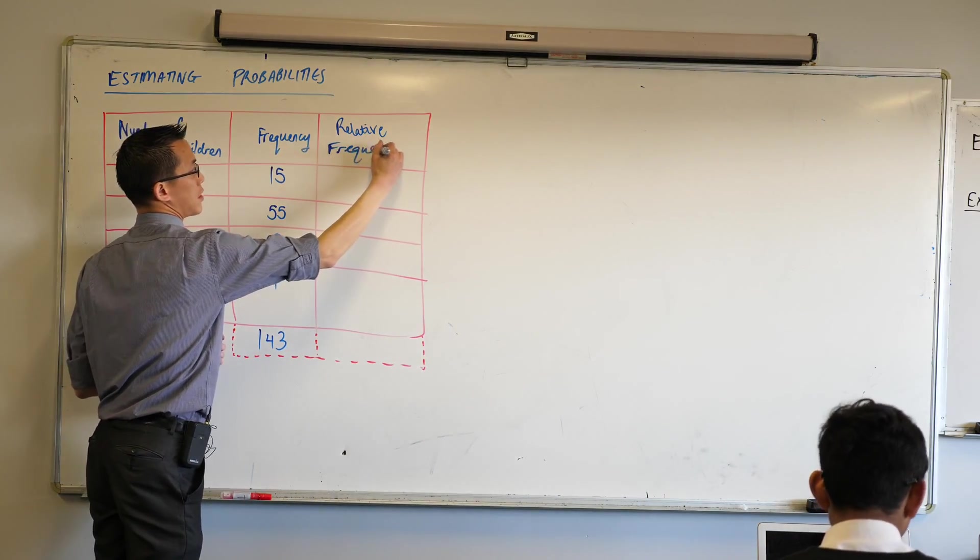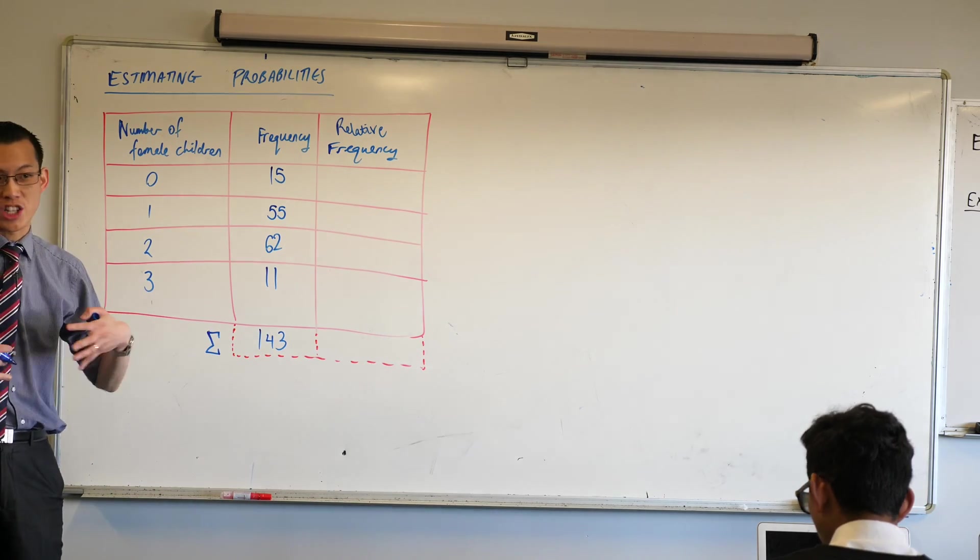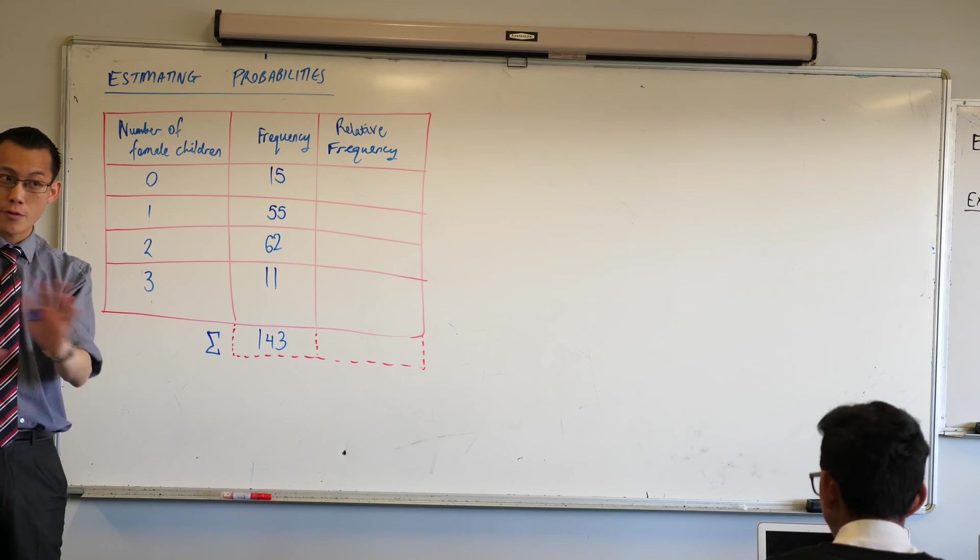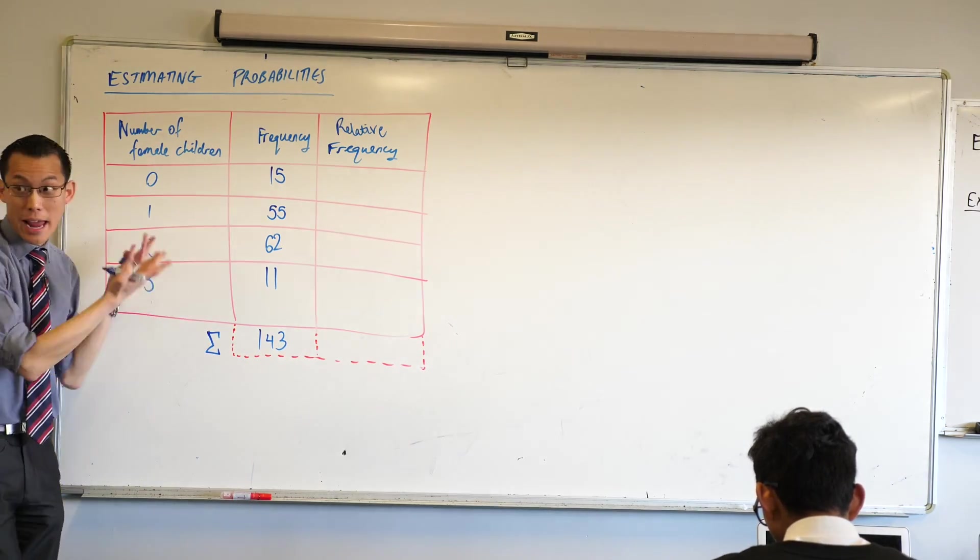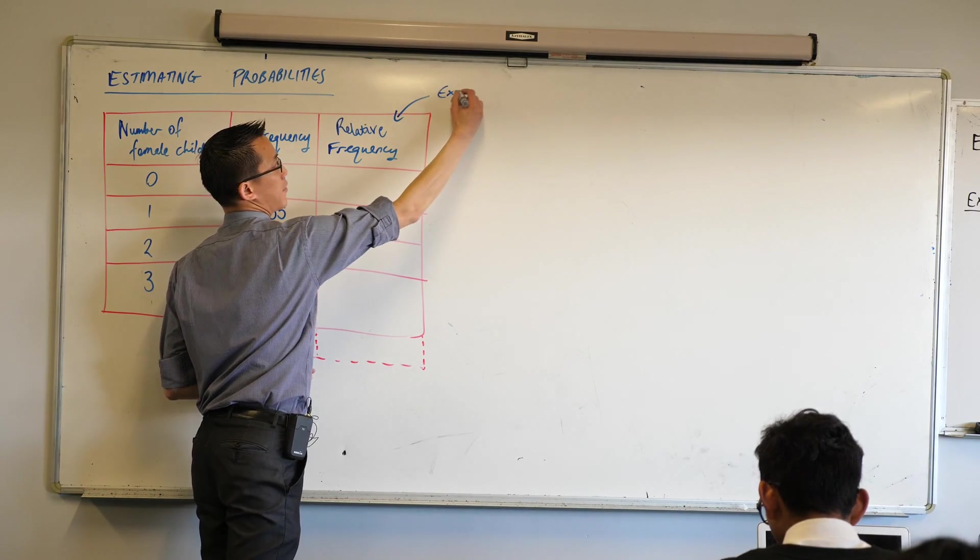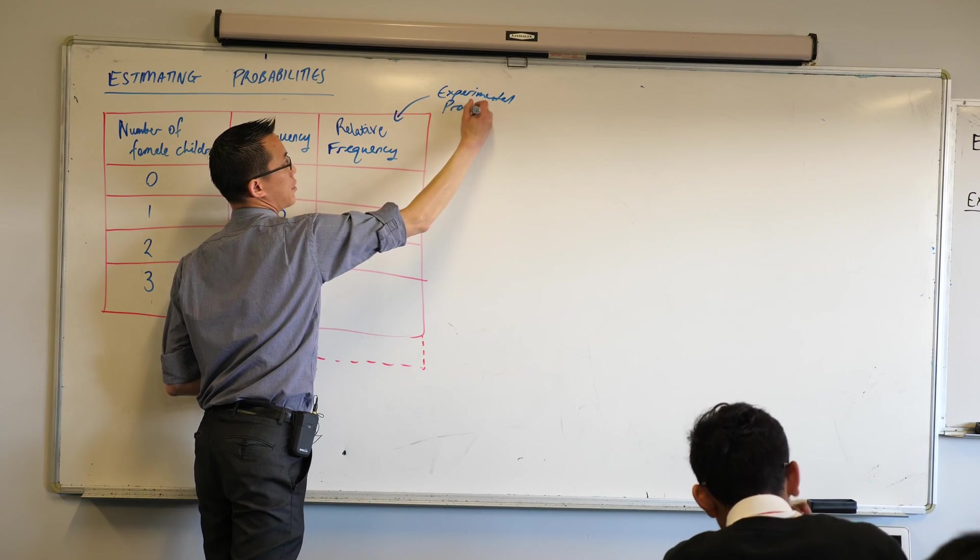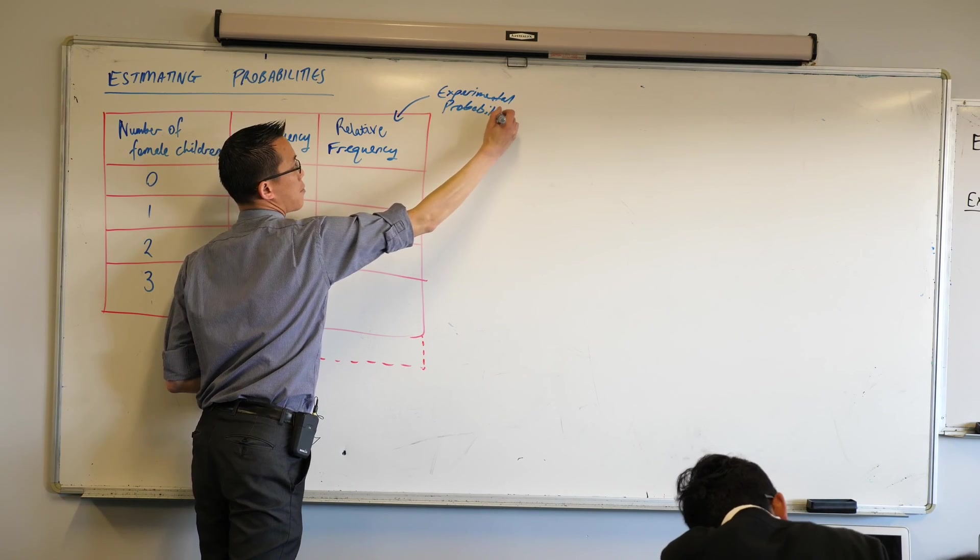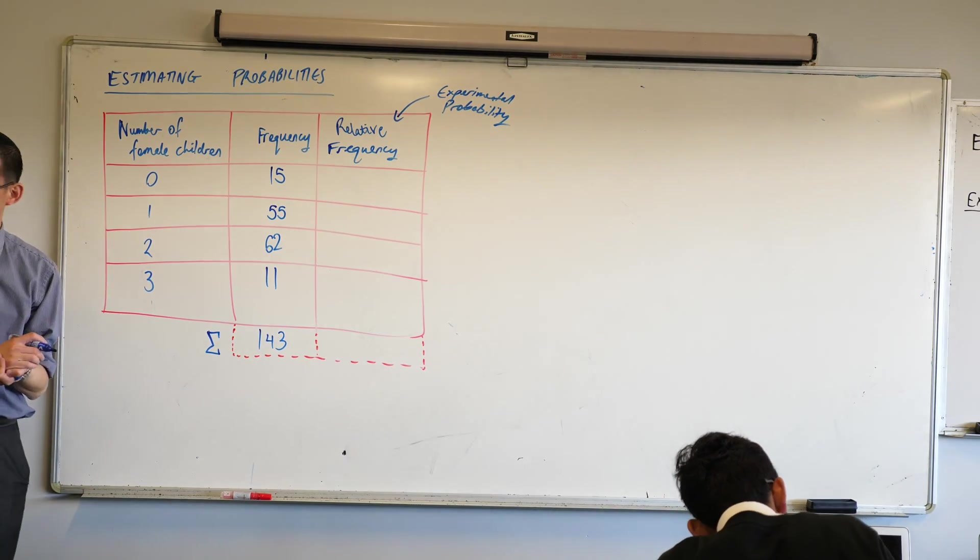Relative frequency, and another name for that in this context is what we call experimental probability. It's not theoretical, it's not like what should happen. It's like we did an experiment. This is what actually happened. Experimental probability is another name for this same idea.